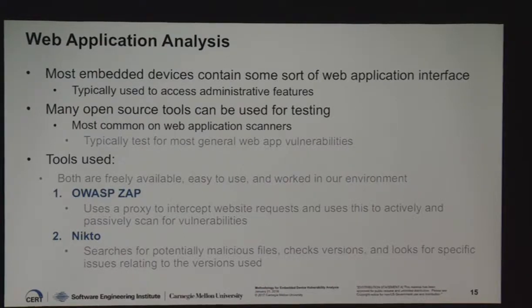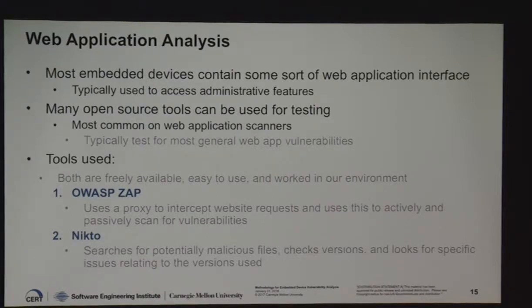Next, we'll talk about web application analysis. Most embedded devices contain some sort of web interface — an easier way to do administrative management and view things when you're not physically around the device. There are tons of open source tools for testing. We used OWASP ZAP and Nikto. OWASP ZAP is a proxy used to intercept website requests and actively and passively scan for vulnerabilities. Nikto searches for potentially malicious files, checks versions, and looks for specific version-related issues. Ideally, use more than one tool so you can cross-reference findings.